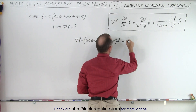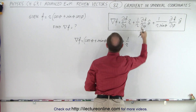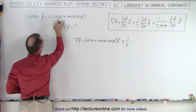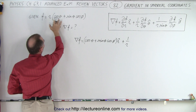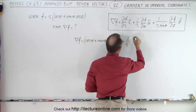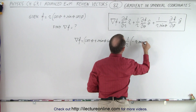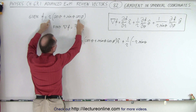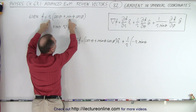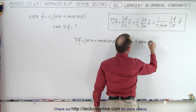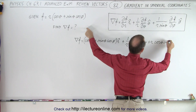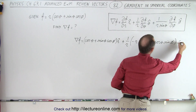Next, plus 1 over r times the partial derivative of the function with respect to theta. We have two terms: r times cosine of theta — the derivative of cosine is negative sine, so that becomes minus r times sine of theta. Then r times sine of theta cosine phi — the derivative of sine is cosine, giving plus r times cosine of theta sine of phi. That's in the theta direction.